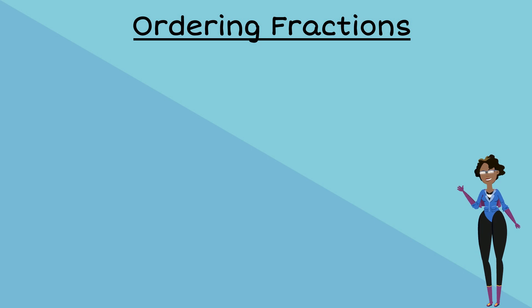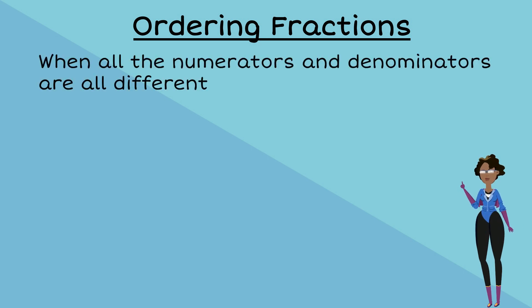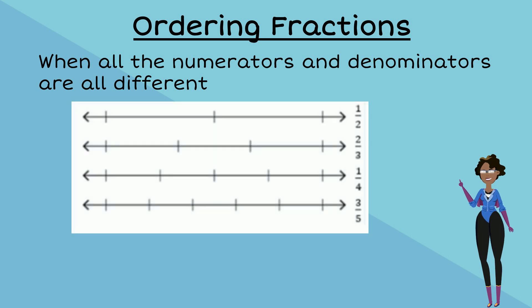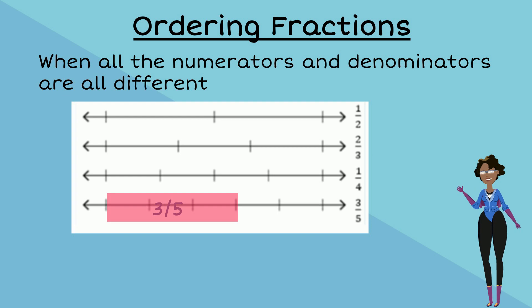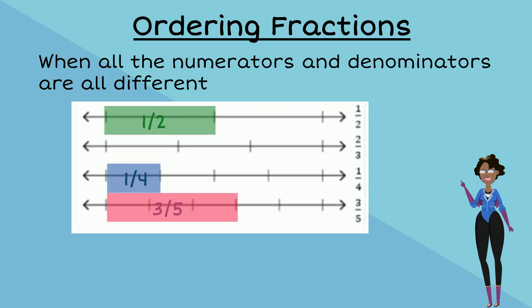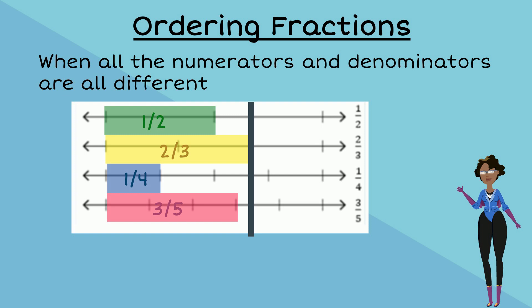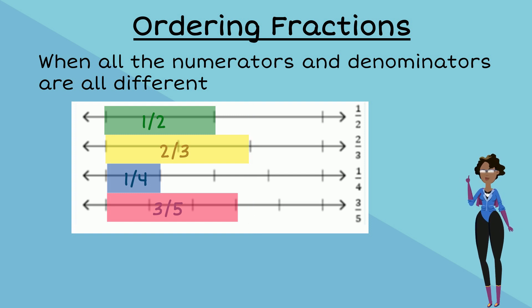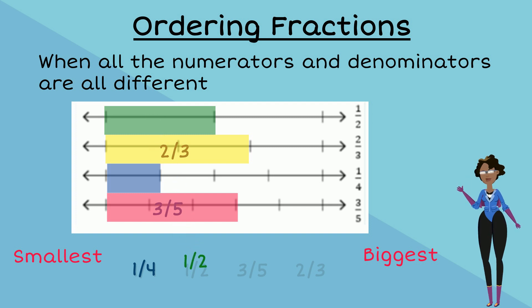In this last example, the numerators and denominators are all different. In this case, we can use number lines to show their positions and compare which ones are smaller and which ones are bigger. For example, let us look at the fractions three fifths, one half, one quarter, and two thirds. We can see that one quarter is positioned behind one half, which means one half is bigger. Two thirds is the biggest fraction here as it is positioned furthest along the number line. Therefore, in ascending order: one quarter, one half, three fifths, and two thirds.